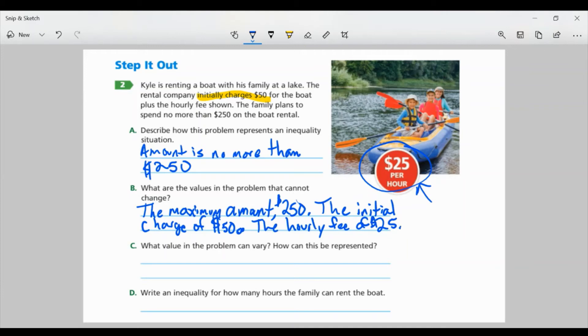Part C. What value in the problem can vary? And how can this be represented? Well, the value that's going to vary is the number of hours. That's what can vary. And how can it be represented? It can be represented with a variable.